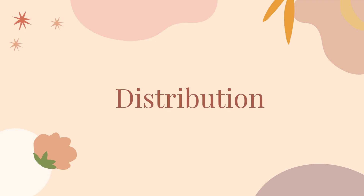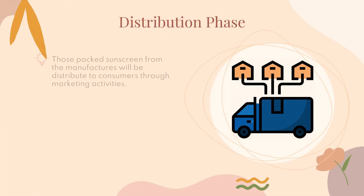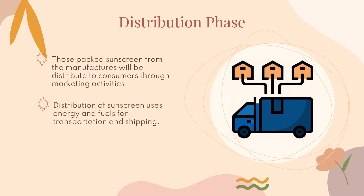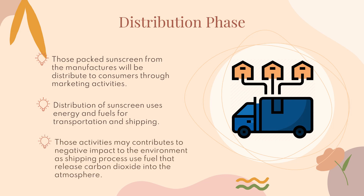The third stage of the sunscreen life cycle is distribution. The packed sunscreen from manufacturers will be distributed to consumers through marketing activities. Distribution uses energy and fuels for transportation and shipping, which may contribute to negative environmental impacts as the shipping process releases carbon dioxide into the atmosphere.